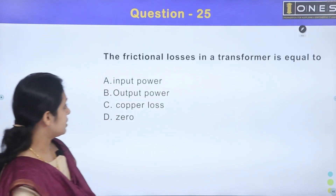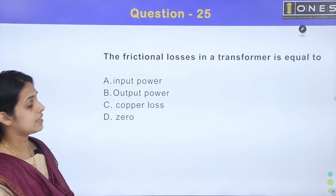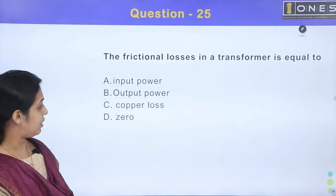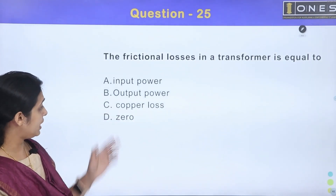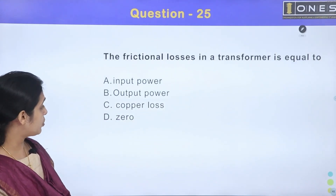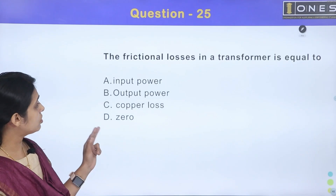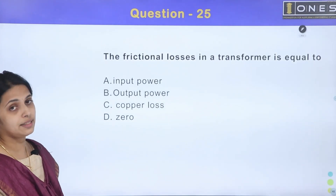Next question. The frictional losses in a transformer equal: Option A: input power, Option B: output power, Option C: copper loss, Option D: 0.